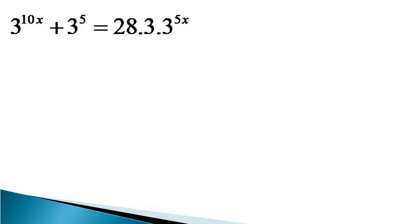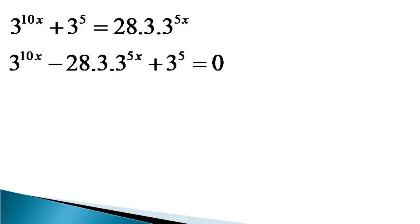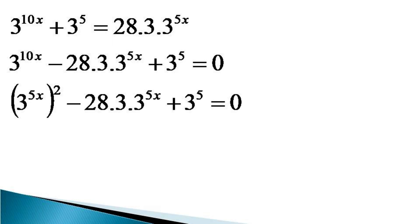We will not multiply the mathematical terms at this time. We keep them as they are and bring all the terms to the left hand side to get the equation 3 raised to the power 10x minus 28 into 3 into 3 raised to the power 5x plus 3 raised to the power 5 is equal to 0. This equation can be represented as 3 raised to the power 5x wholly squared minus 28 into 3 into 3 raised to the power 5x plus 3 raised to the power 5 is equal to 0.